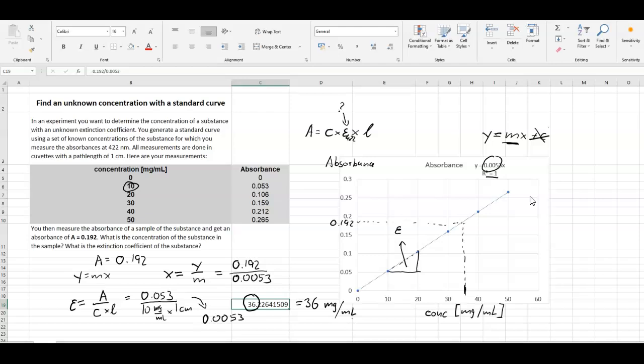And what's the unit? It would be milliliter times milligram to the minus one centimeter to the minus one. In this case, because the unit for the concentration was given in milligram per milliliter. So I hope this makes sense. And thank you very much for watching.